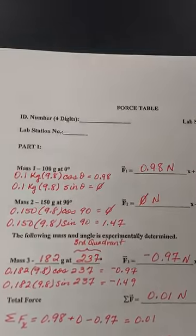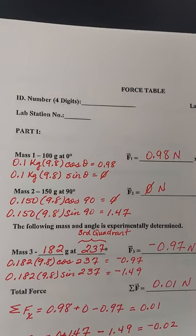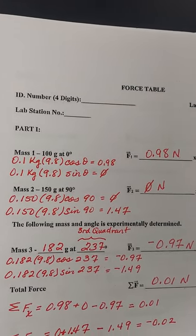If you look at your lab sheet, part one says mass one is 100 grams at zero degrees. So I hung 100 grams of mass and I placed the string directly at zero degrees.